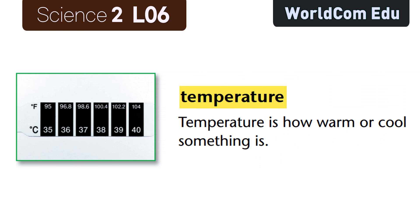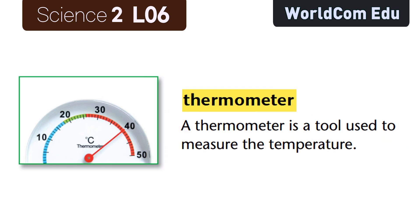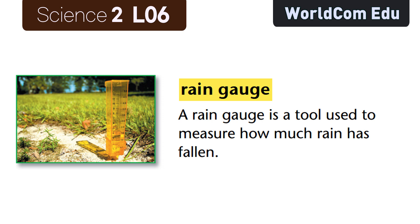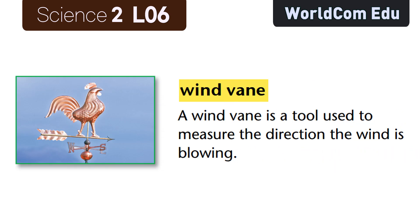Temperature — temperature is how warm or cool something is. Thermometer — a thermometer is a tool used to measure the temperature. Rain gauge — a rain gauge is a tool used to measure how much rain has fallen. Wind vane — a wind vane is a tool used to measure the direction the wind is blowing.